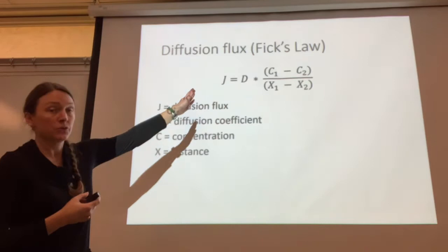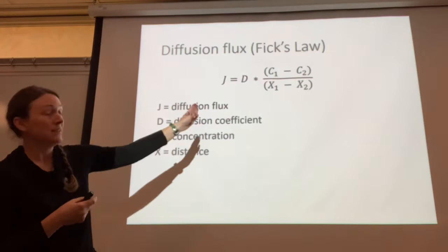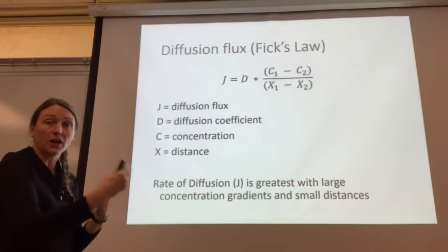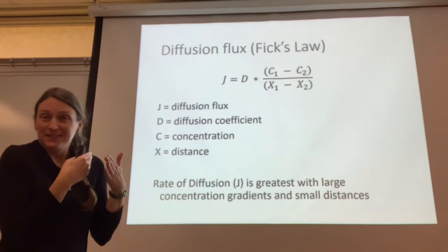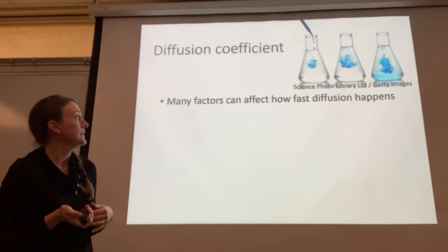The diffusion flux J is equal to D, which is a diffusion coefficient that changes depending on what system you're working in, multiplied by the difference between the two concentrations divided by the difference between the two distances. The rate of diffusion J is greatest — the flux is greatest — when there are large concentration gradients over small distances.